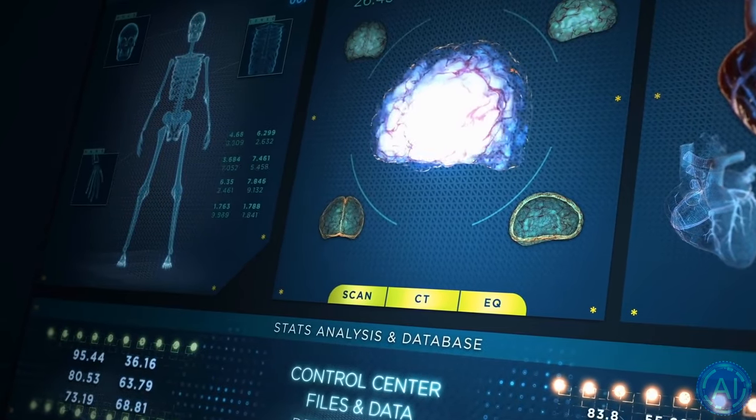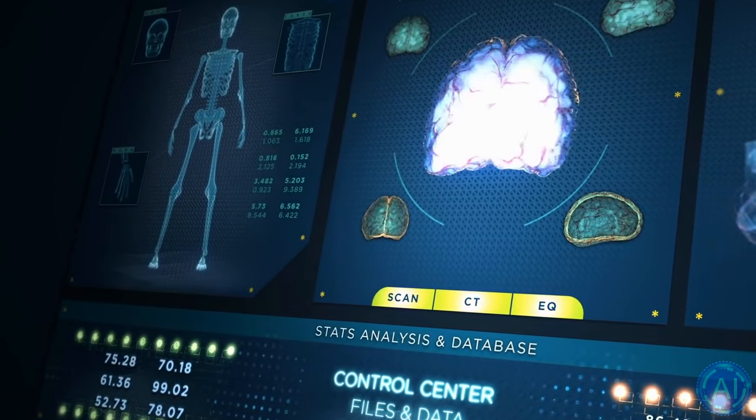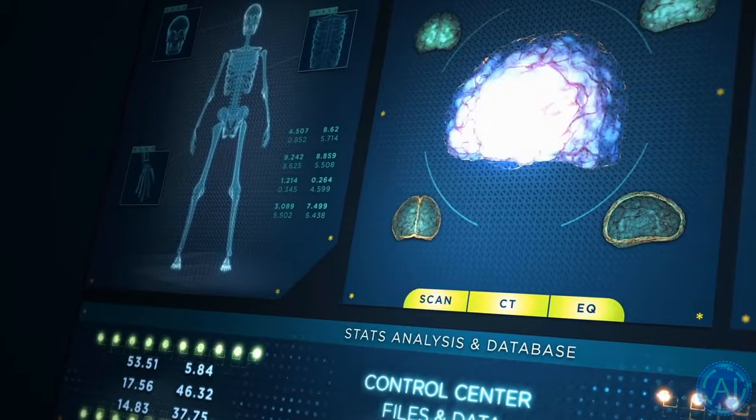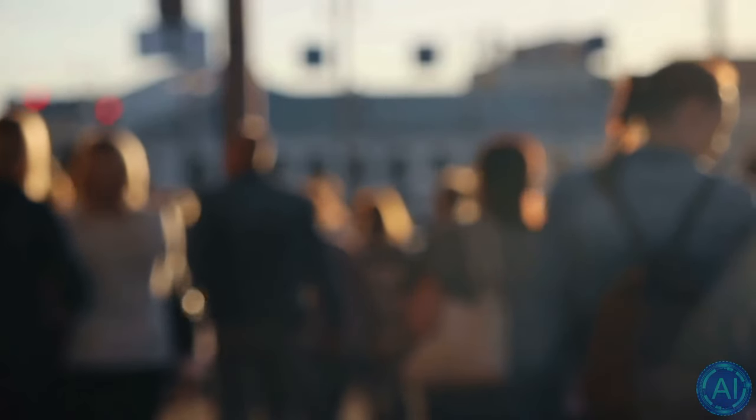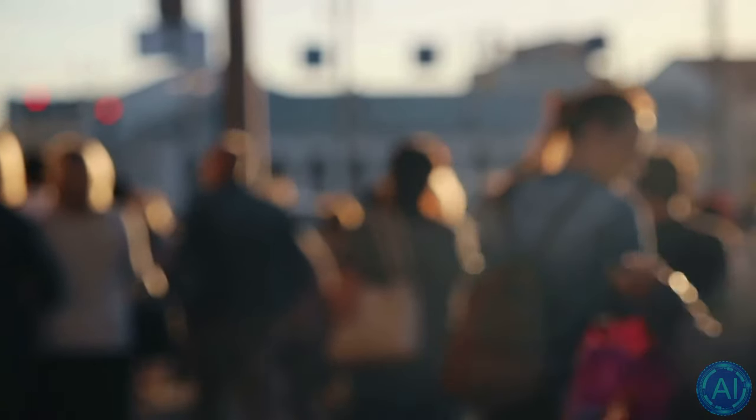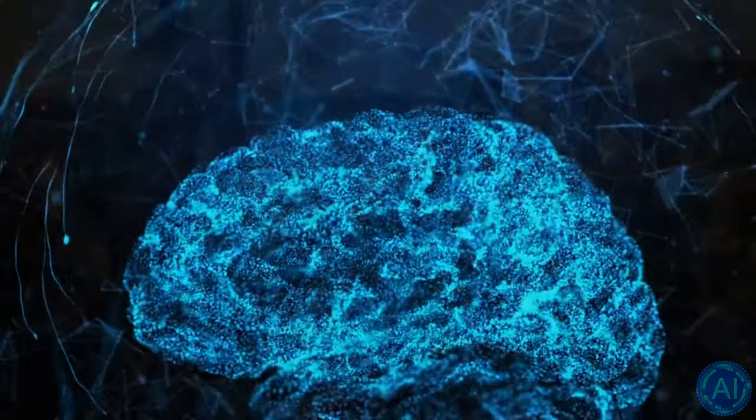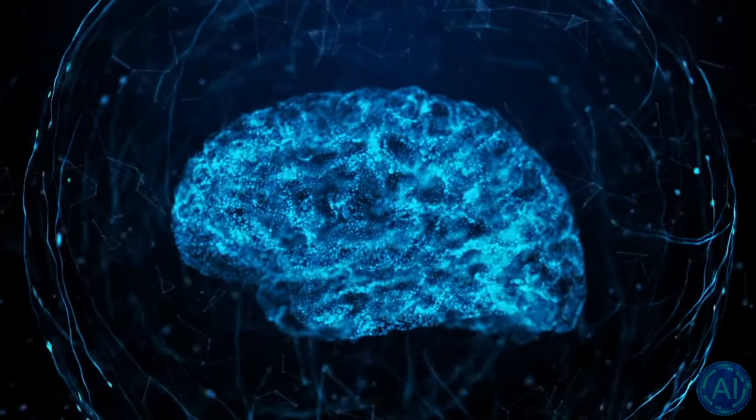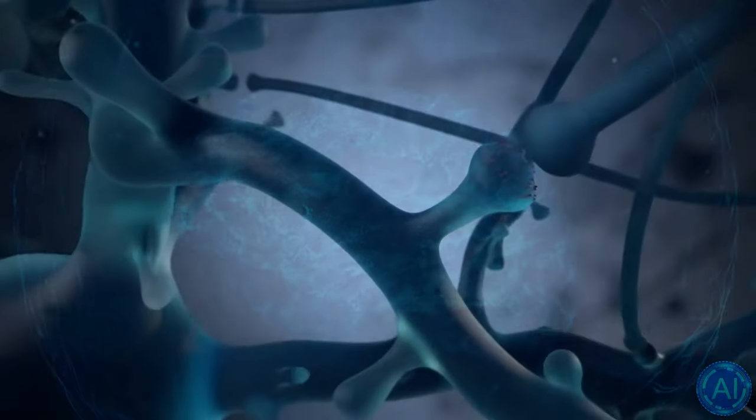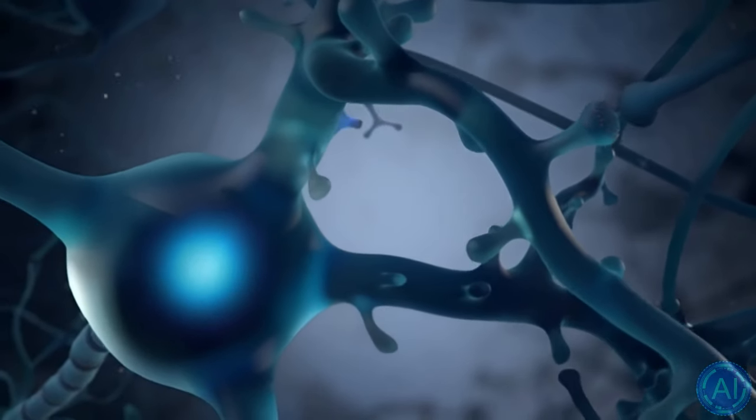The researchers created the map by slicing donor tissue into 5,330 nanometer-thick pieces and imaging them with a scanning electron microscope with a resolution of 4 nanometers. The 225 million pictures that resulted were computationally aligned and stitched together to create a 3D digital depiction of the area.